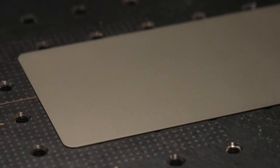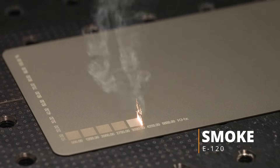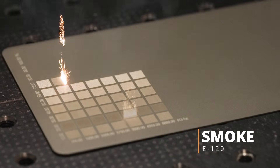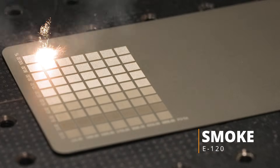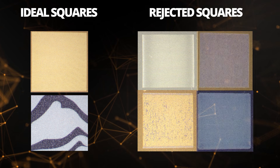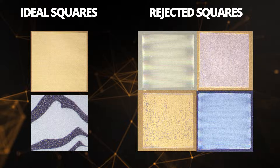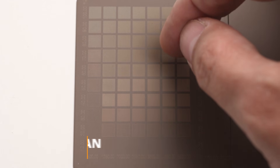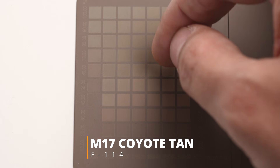Now we can run the parameter test. Analyze the results, adjust, and repeat until you have a full resolution color change with no gaps or spaces. We don't want to burn the coating, nor do we want to remove the coating. Using the back of a fingernail is a great way to tell if you have removed any coating, as you shouldn't feel any ridges.